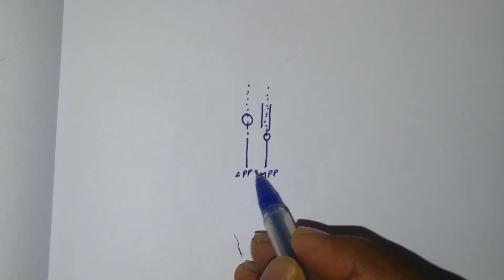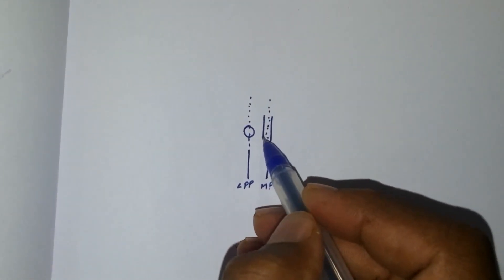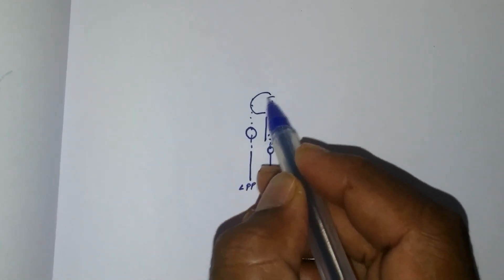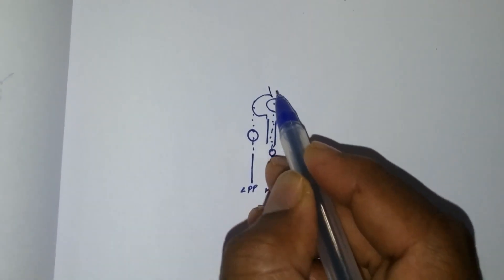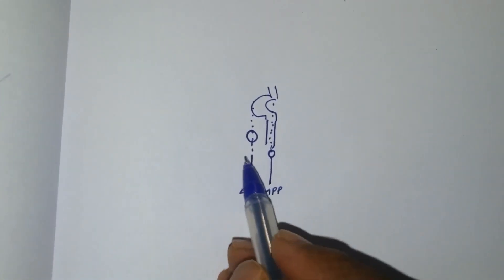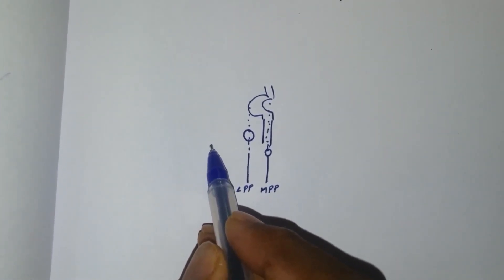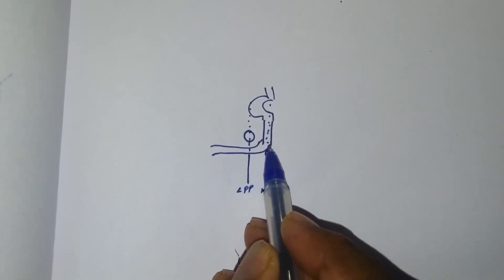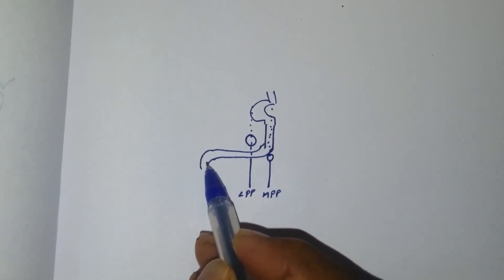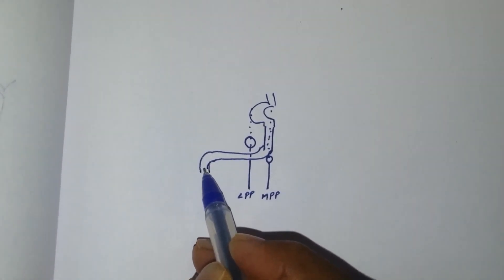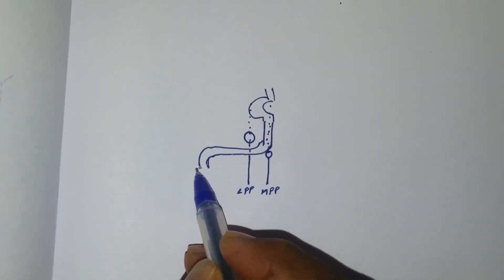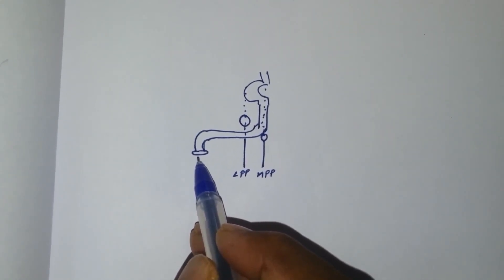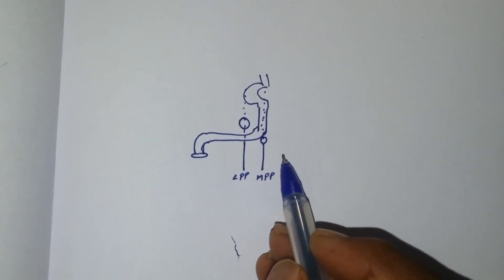This is the lateral pterygoid plate, and this is the paraclival carotid. Now, paracavernous carotid and petrous carotid. Next, pre-cochlear carotid, and this is the carotid canal.